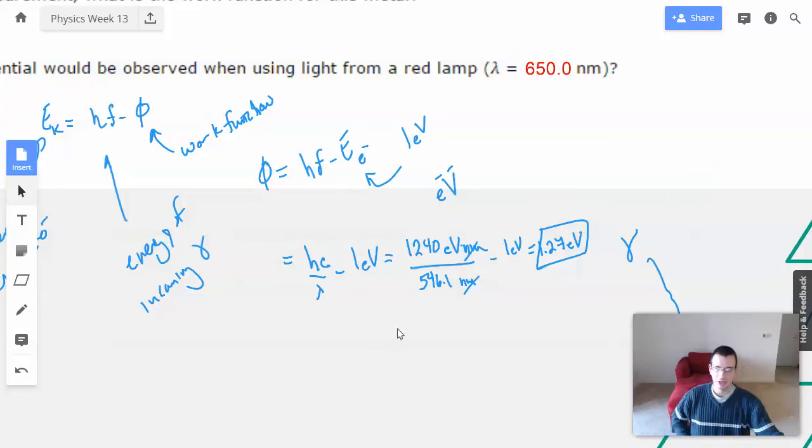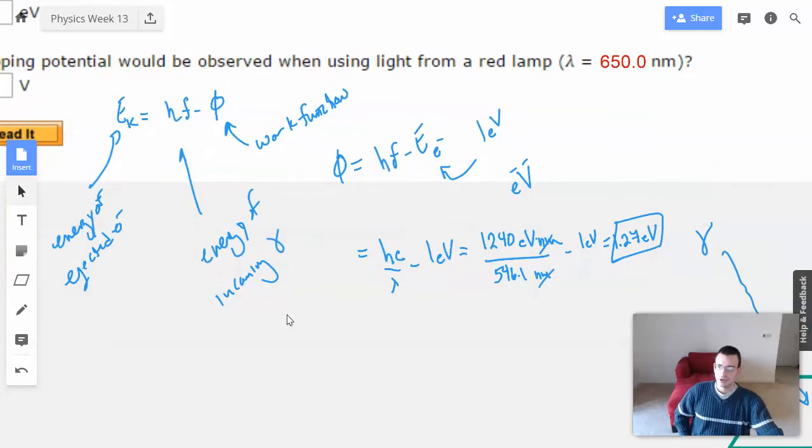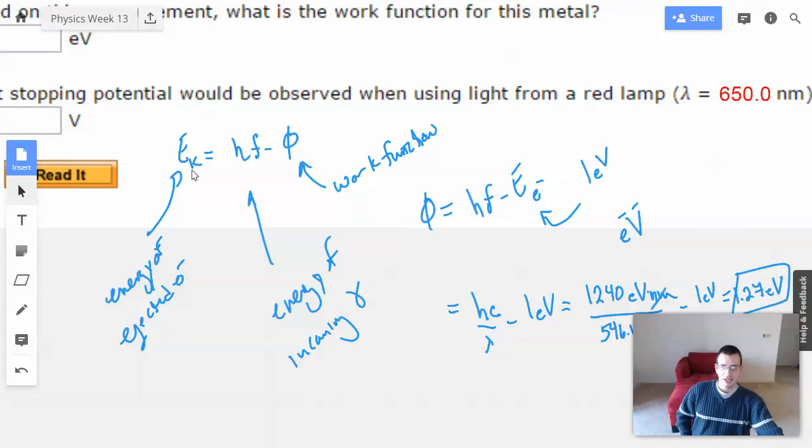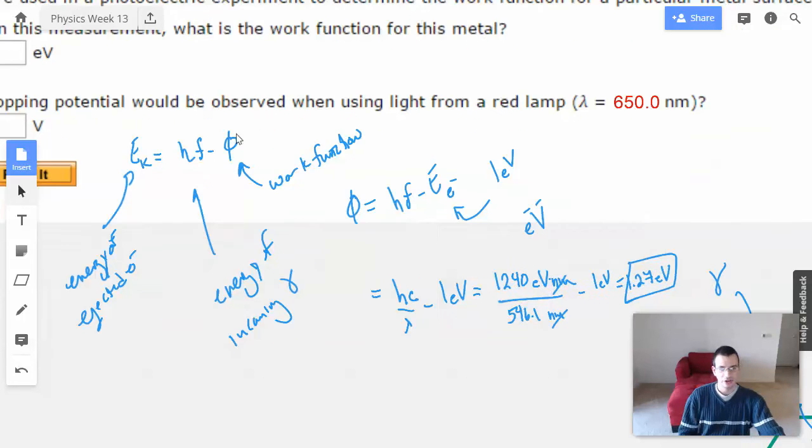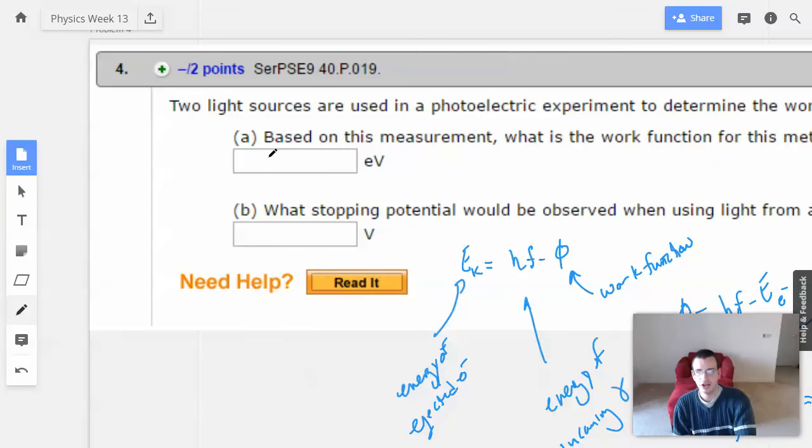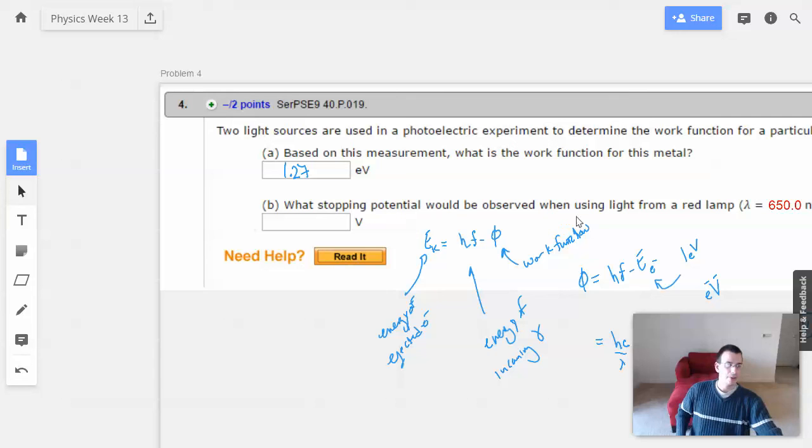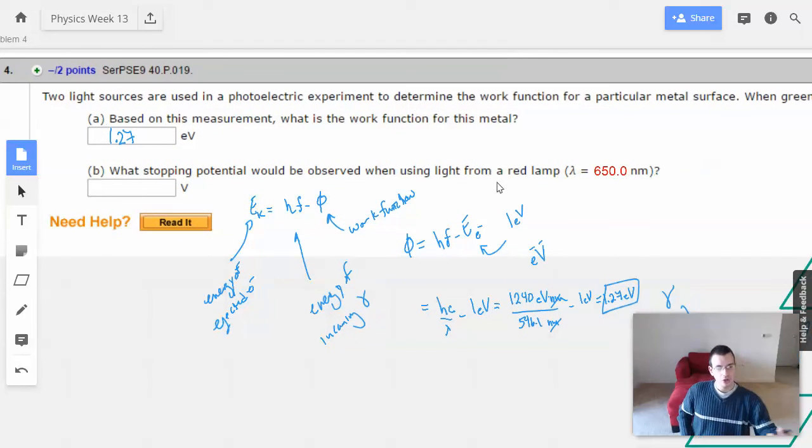So in case I lost you along the way, because I was pretty lost most of the way too. So here's the equation we have. An energy of an electron that's ejected from metal is going to be the energy that the photon gave to it coming in minus whatever energy was required to de-stick it. Rearranging the equation and using the voltage of one and one electron to give us the energy of one electron volt, we can then rearrange the equation and solve for the work function. So this is the work function of the metal. The work function is unique to a metal. So when they say what stopping potential would be observed when using light from a red lamp, we know that the work function for that metal is going to stay the same.